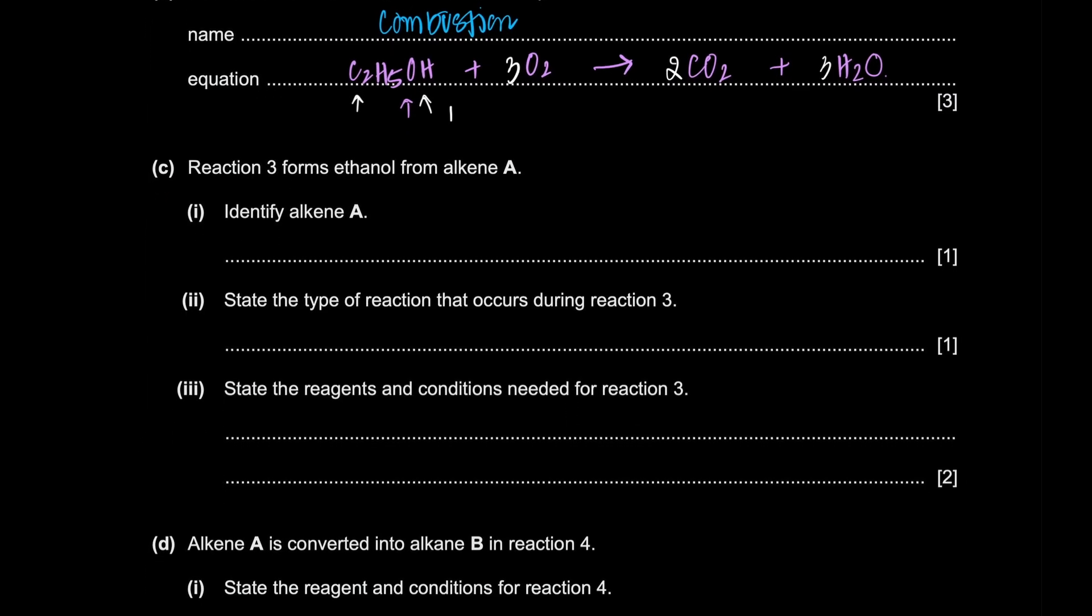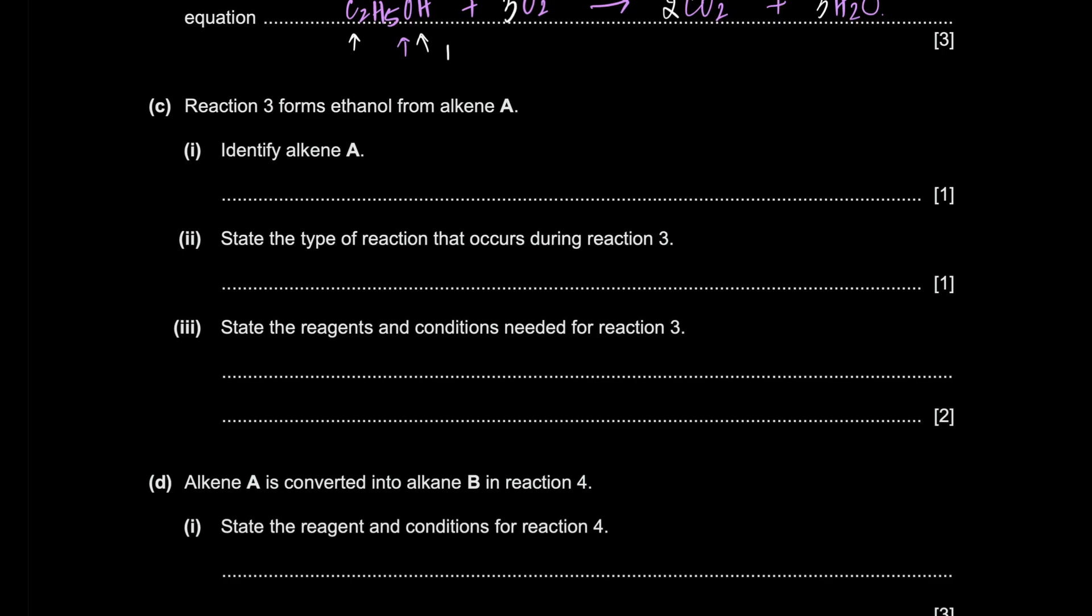Reaction three is ethanol from an alkene. Identify alkene one. I don't even have to look at it. If ethanol is formed, it has to be from ethene. So I think I can just say ethene, which is C2H4. State the type of reaction occurs during reaction three. A lot of people might get confused and call it hydration, but the type of reaction, not the name of the reaction, the type is confusing. I get it. But it is addition. It's an addition reaction. And that's what they want you to say.